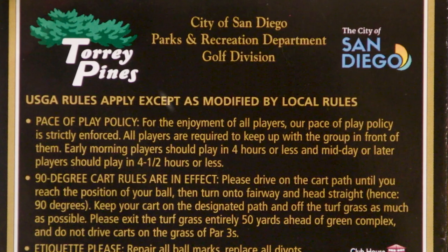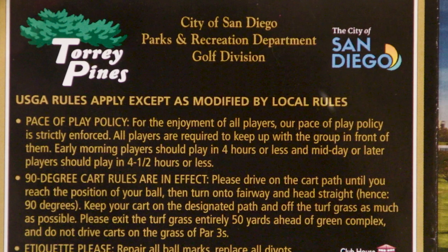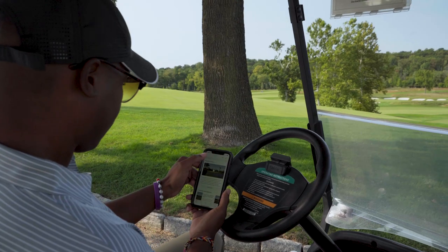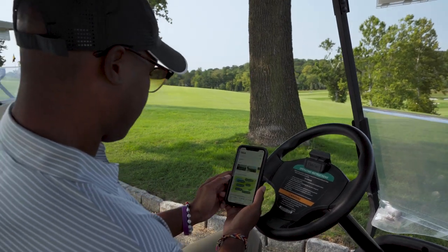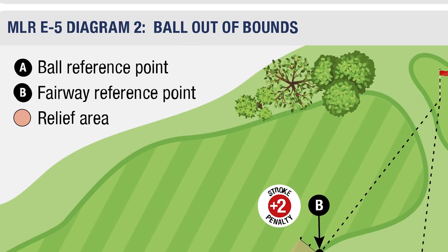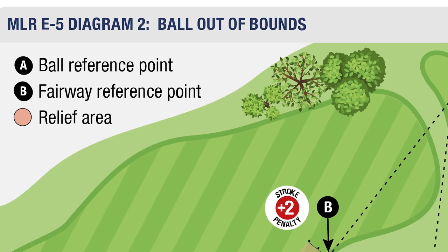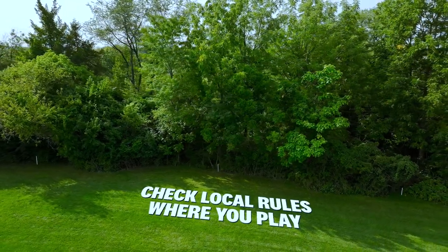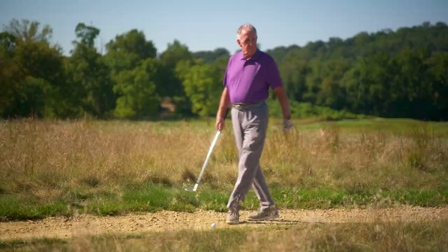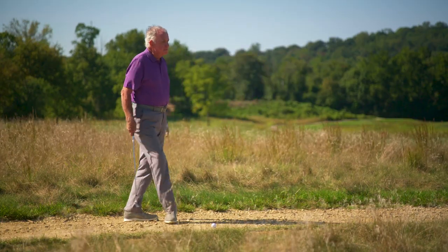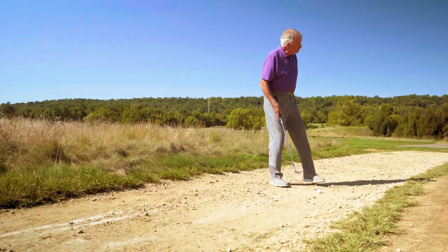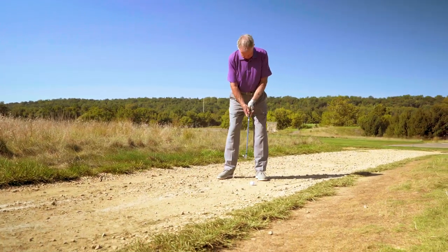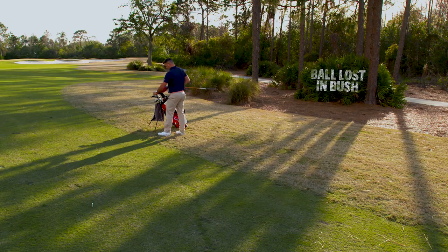There are hundreds of examples called model local rules that can be found in the rules of golf, such as defining out of bounds, since it is important to know what defines the course boundary and the status of objects on the course, like whether or not you are allowed to take free relief from a dirt path.